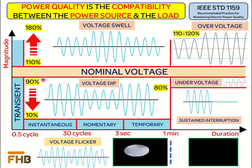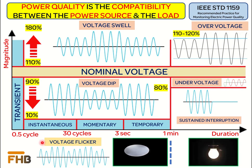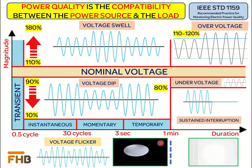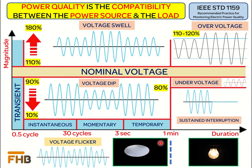Typical magnitude of voltage sag ranges from 90% to 10% of the nominal voltage. Voltage flicker or voltage fluctuation is limited to lighting applications and is mostly considered as a nuisance. This effect is produced due to systematic variation in the voltage waveform. As per IEEE standard, any variation in the voltage magnitude which is less than 7% of the nominal voltage has little effect on other types of consumer loads.